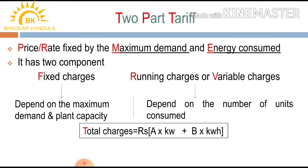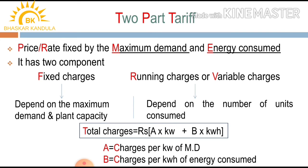The expression for two-part tariff is: total charges = rupees a × kilowatt + b × kilowatt hour, where 'a' is the charges per kilowatt of maximum demand and 'b' is the charges per kilowatt hour of energy consumed.